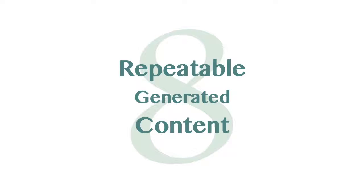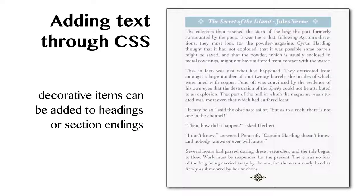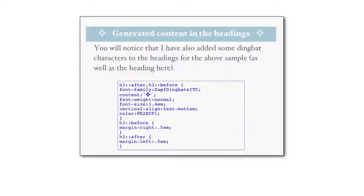It is possible to add content at the end of each section using CSS — you might have a little flourish at the end of a section as a decorative item. CSS can add content using the before and after pseudo-elements. Here's an example: I've got a little character at the beginning and end of a heading that's not in the HTML but in the CSS, using h3::after and h3::before, providing a ZapfDingbats character.